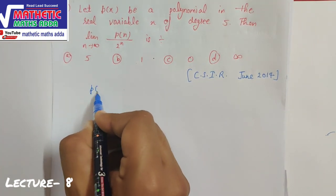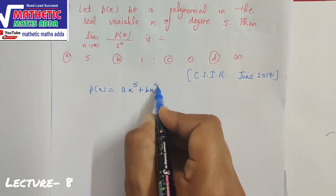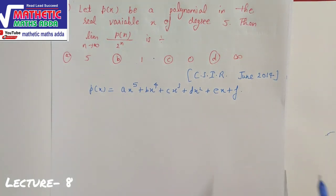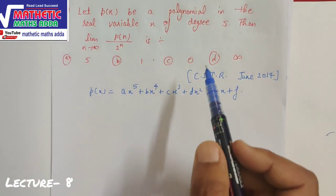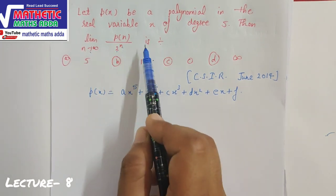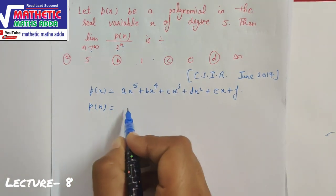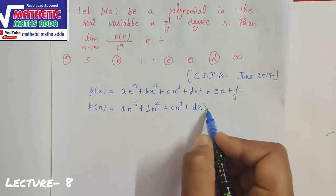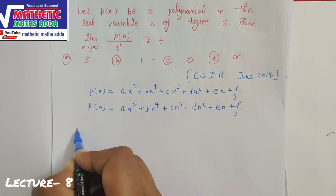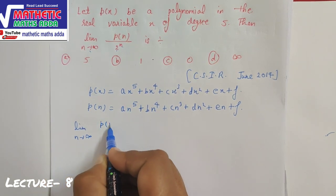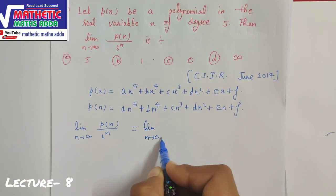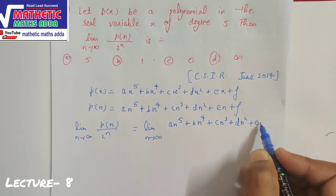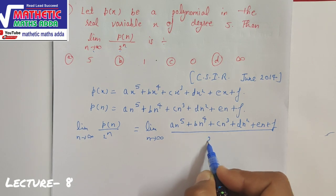Now the third question is from CSIR June 2014. Here P(x) is a degree-5 polynomial: P(x) = Ax⁵ + Bx⁴ + Cx³ + Dx² + Ex + F. You have to find the limit as n tends to infinity of P(n) / 2ⁿ. So P(n) = Anⁿ + Bn⁴ + Cn³ + Dn² + En + F, all divided by 2ⁿ.